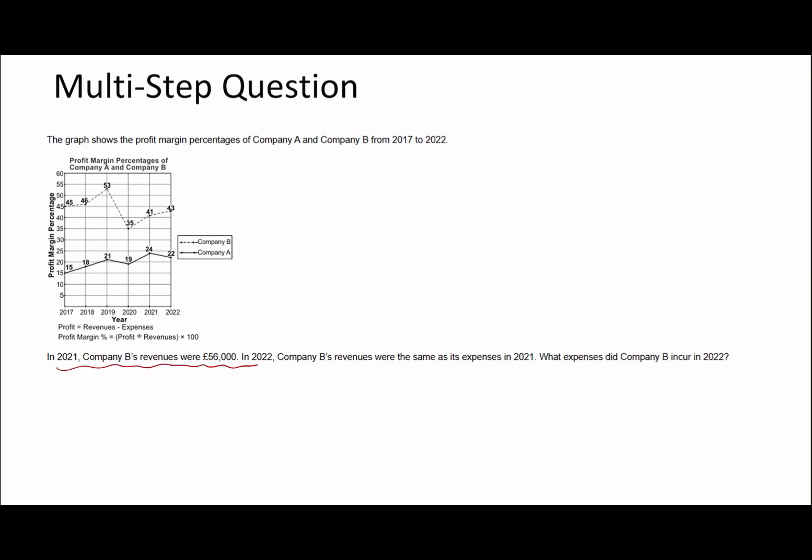Let's have a look at this question. In 2021 company B's revenues were 56,000. In 2022 company B's revenues were the same as expenses in 2021. What expenses did company B incur in 2022? When I read this question I think, what is going on? Remember in those questions you'd normally skip and come back to them — so when I skip, in my mind I'm thinking I literally have no clue, so it's probably one of the very last questions I come back to.